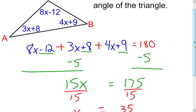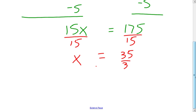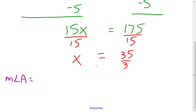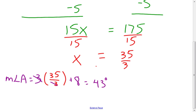I ultimately want to find the measure of angle A, angle B, and angle C. Starting with angle A, which is 3x plus 8: I take 3 times 35 thirds, and then add 8. The 3's divide out, leaving 35 plus 8, so 43 degrees is the measure of angle A.